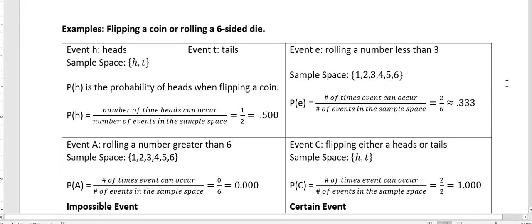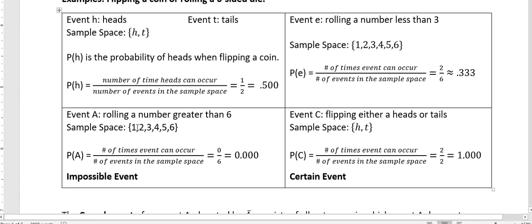Let's look at another example of rolling a dice. This one, I want to roll a number greater than six. And my sample space is one, two, three, four, five, and six. So the number of times that that can occur is zero. I can never roll something more than six because I only have one through six on my dice. And the number of events in my sample space is six, but I have zero over six.